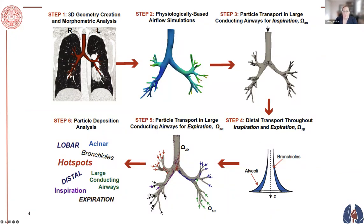Once particles leave the 3D domain, we pass them to a 1D model to simulate the distal regions of the lung, based on the original trumpet model developed in the 1970s. During exhalation we pass the particles back to the 3D model so that particles that do not deposit have the opportunity to be exhaled. We then do post-processing steps to look at regional deposition. This is our general pipeline, and we do deviate from it depending on the application.